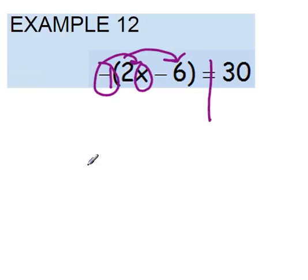And we're going to take that negative 1 and multiply it times everything in those parentheses. So the negative 1 times 2x makes negative 2x, and the negative 1 times a negative 6 will give us a positive 6. All of that will equal 30.